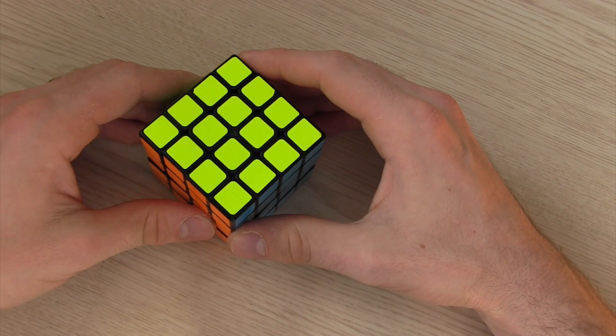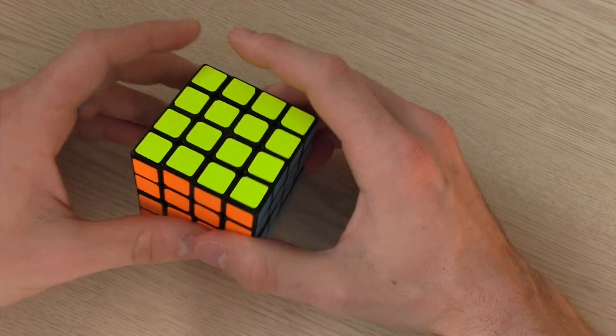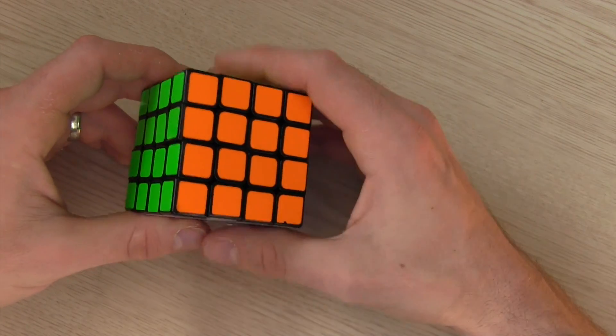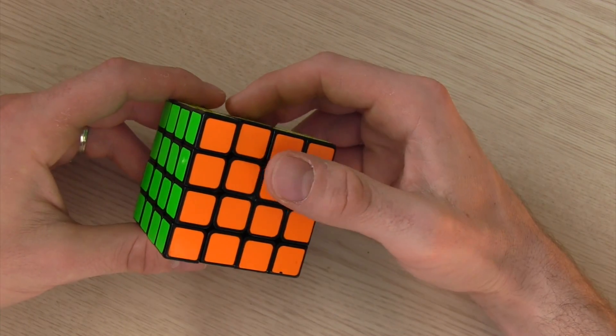So it's exactly like basic method just with things moved around. Some things make it a little bit easier like the look ahead as well as pairing the first two edges but the last four centers are a little more difficult.